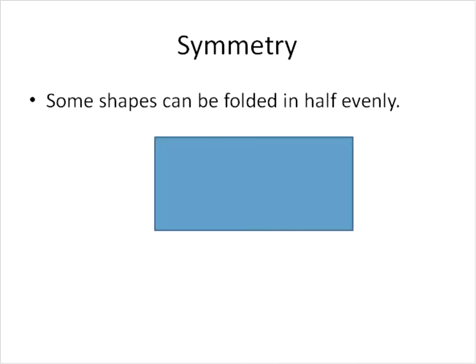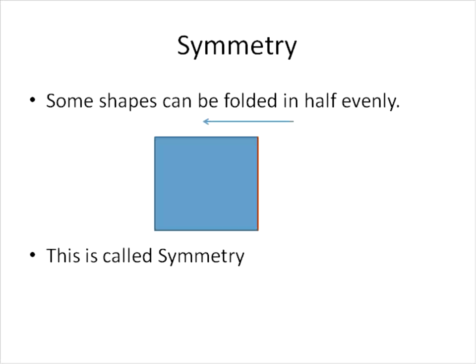Now that we've talked a little bit about polygons, let's talk about one of the properties of polygons that's kind of fun. Symmetry. Symmetry is some shapes can be folded in half evenly. So let's take a look at this shape. We're going to draw a line straight down the middle. And then we're going to fold it in half. Just grab that side and fold it over. That is called symmetry. If you can fold a shape in half evenly and there's no overhang on the other side, it is symmetry. It's a symmetric shape.